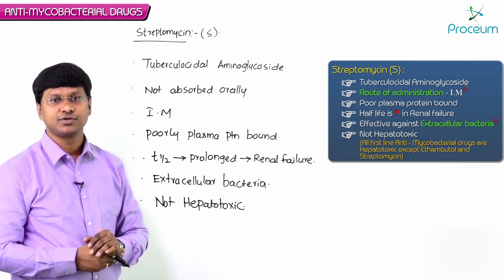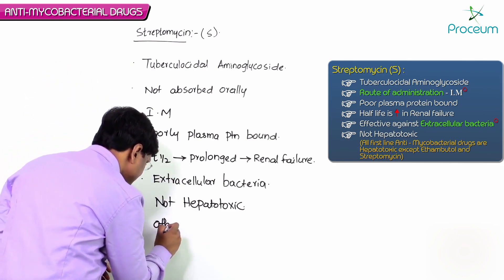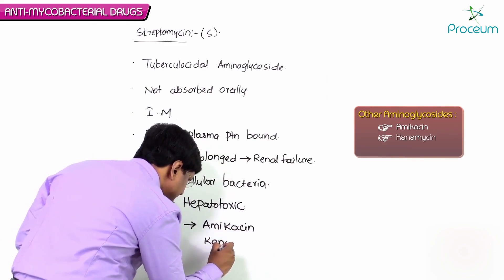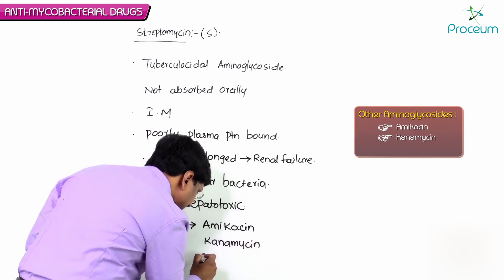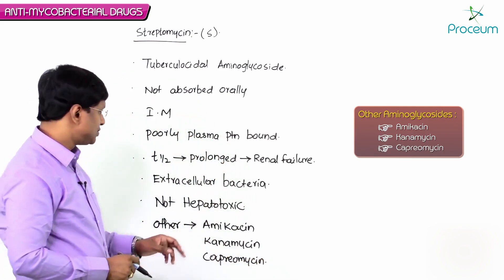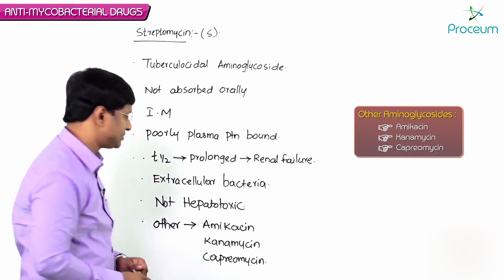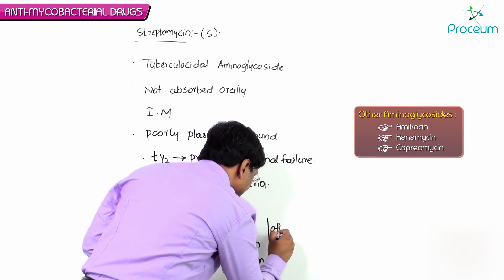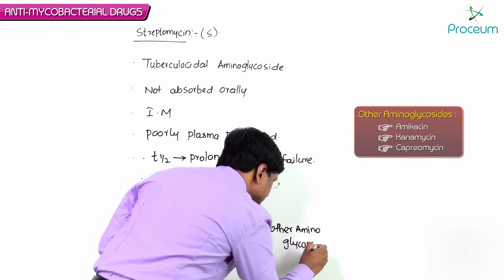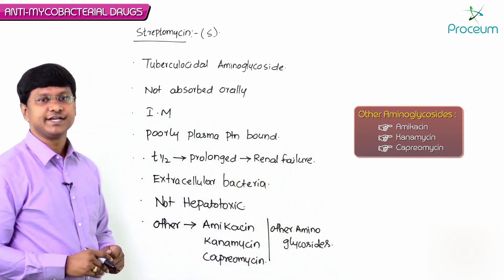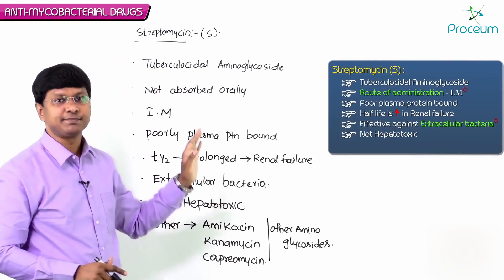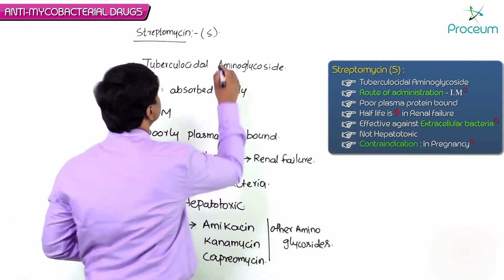Other aminoglycosides used in the treatment of tuberculosis include amikacin, kanamycin, and capreomycin. These are the other aminoglycosides used in tuberculosis treatment. An important point to remember: streptomycin is contraindicated in pregnancy.